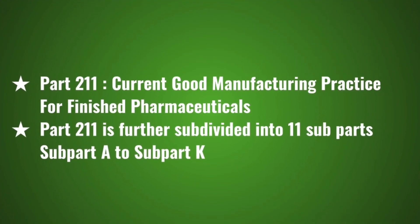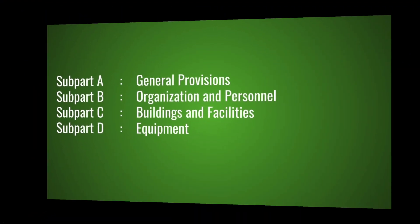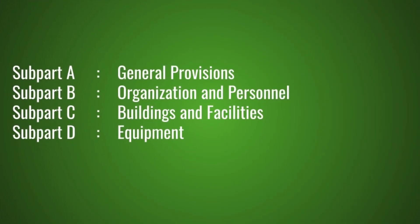Part 211 — Current Good Manufacturing Practice for Finished Pharmaceuticals — is further subdivided into 11 subparts, Subpart A to Subpart K. Subpart A: General Provisions. Subpart B: Organization and Personnel. Subpart C: Buildings and Facilities. Subpart D: Equipment.